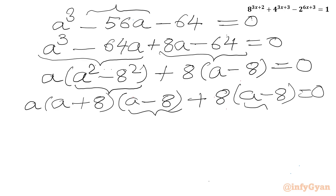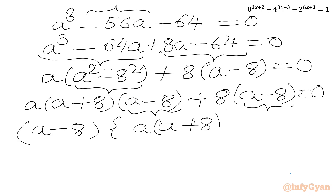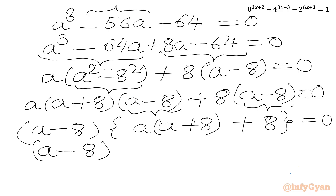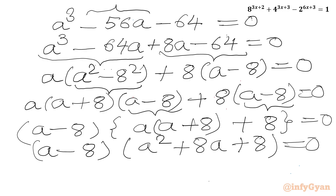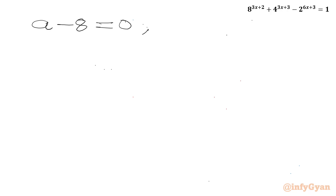Now (a - 8) is a common factor. Taking it out: (a - 8)[a(a + 8) + 8] = 0, which gives (a - 8)(a² + 8a + 8) = 0. Applying the product zero rule, either a - 8 = 0 or a² + 8a + 8 = 0.